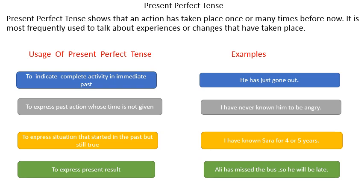Third, to express situation that started in the past but still true. Example, I have known Sarah for 4 or 5 years. Last use of present perfect is to express present result.